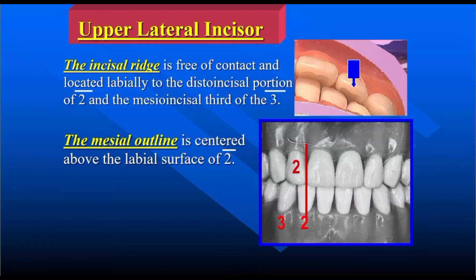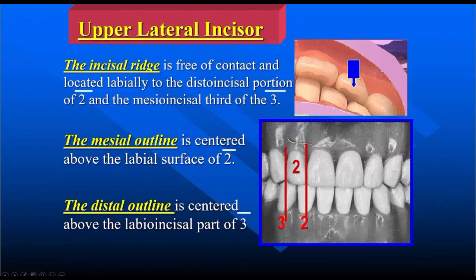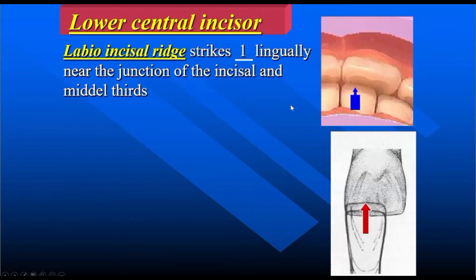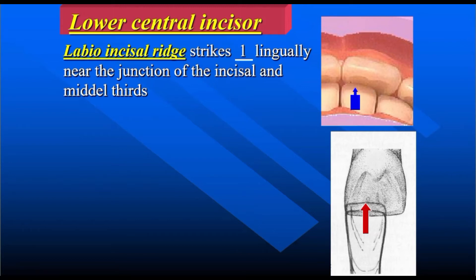The mesial outline is centered above the labial surface of the tooth. The distal outline is centered above the labial incisor part of the lower three. The cingulum is directly above the labial embrasure between tooth two and three. The lower central incisor's incisal edge strikes the upper tooth lingually near the junction of the incisal and middle third — this is the general rule, so that the upper cingulum is free and the lower cingulum is also free. Only the incisal edge contacts at the junction of the incisal one-third and middle one-third of the upper central incisor.